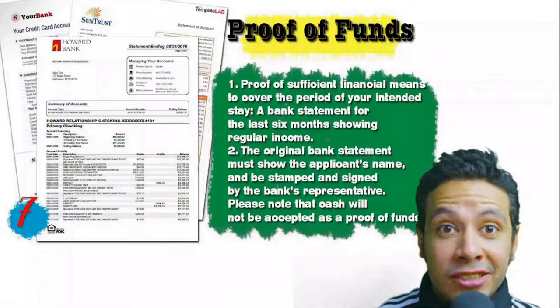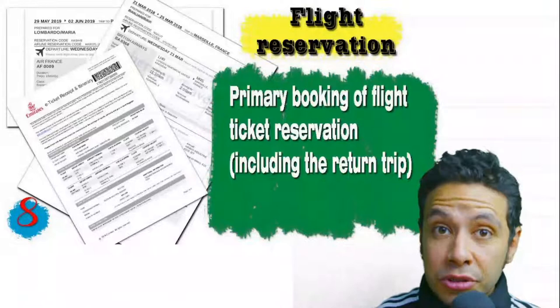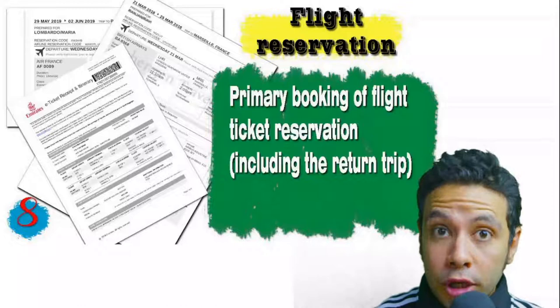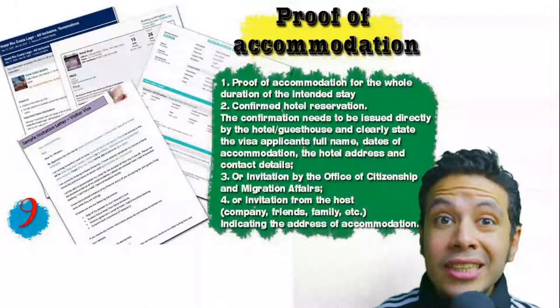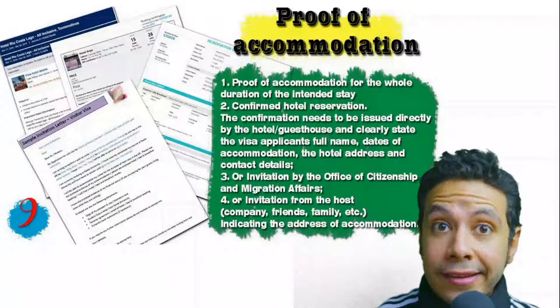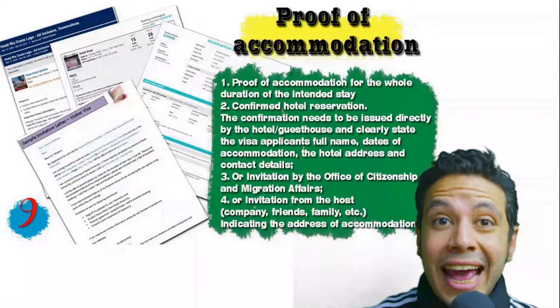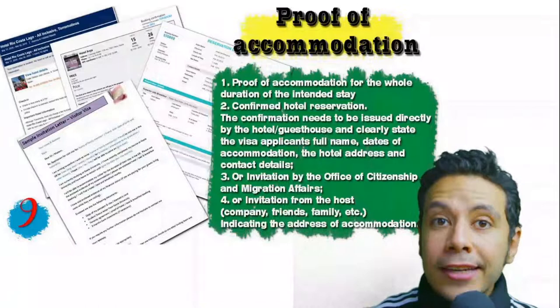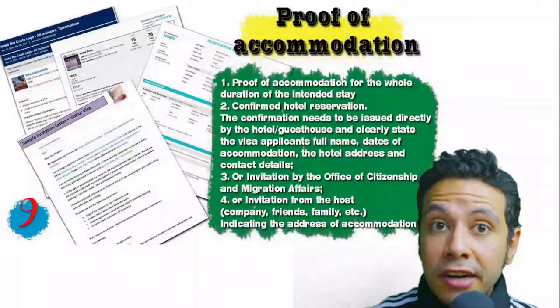You should also provide a flight reservation — an initial booking is usually sufficient, though in some cases a confirmed booking is required. The reservation must include a return ticket. You will also need proof of accommodation: a confirmed hotel reservation, an invitation from a host, or an invitation from an organization. For hotels and hostels, an initial booking is generally acceptable. The hotel name, address, and contact number must be mentioned.